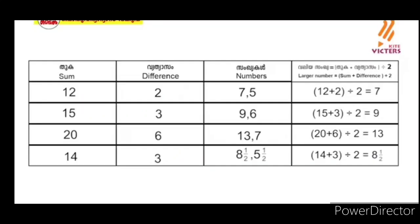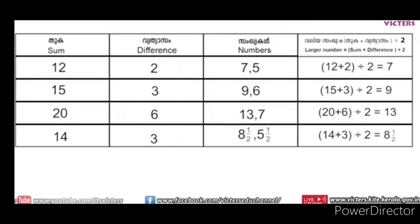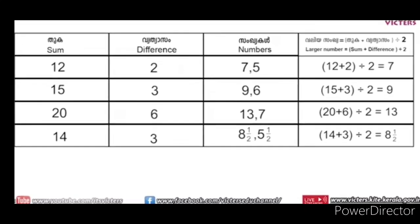What is the algebraic expression? The algebraic expression is n plus 1 divided by 2. The algebraic expression is equal to 3 plus 1 divided by 2. That's the sum plus difference divided by 2. 12 plus 2 divided by 2 is the answer.